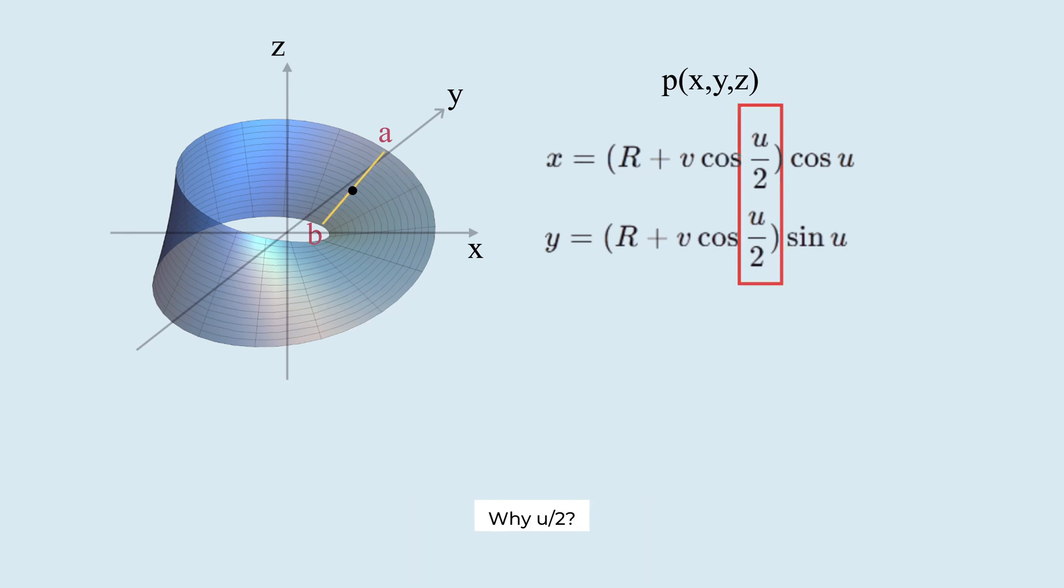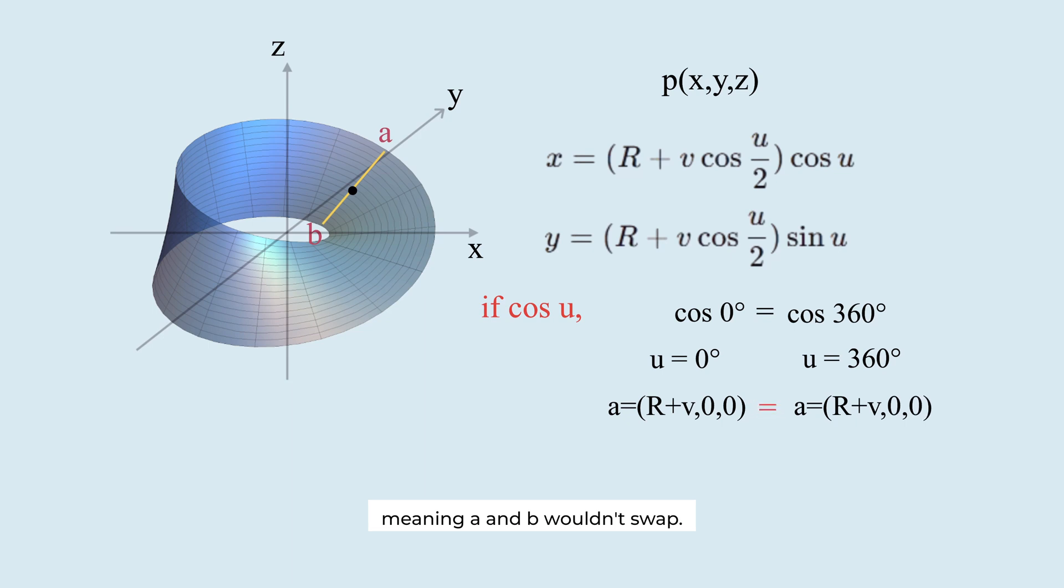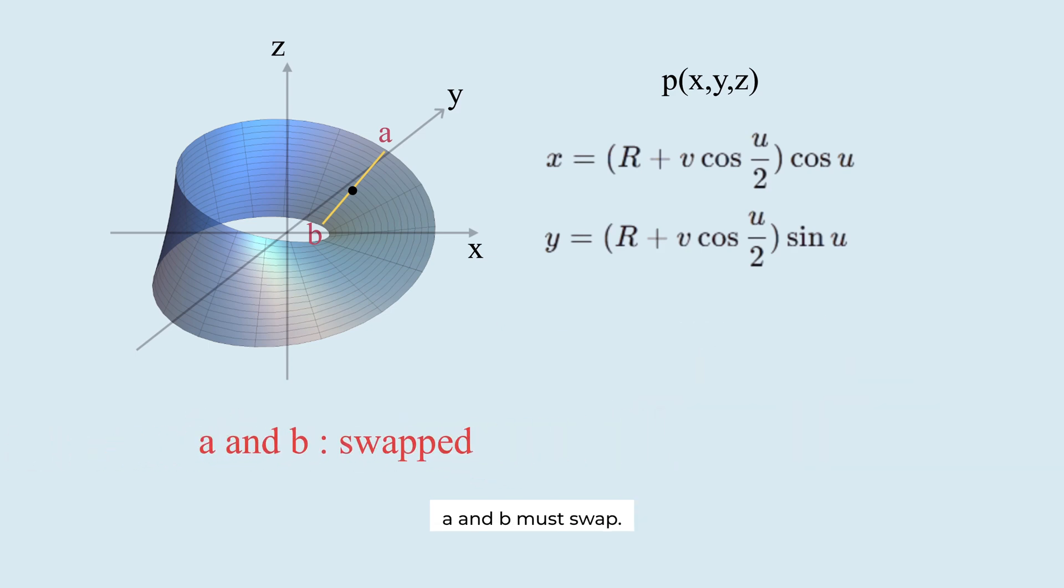Why u over 2? If we used u instead of u/2, cos(0°) and cos(360°) would be the same, meaning A and B wouldn't swap. For it to be a Möbius strip, A and B must swap. That's why we use u/2. Cos(360°/2) becomes -1, the opposite of 1.